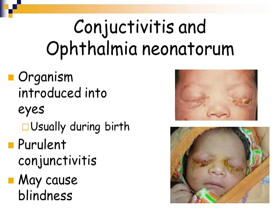Neisseria gonorrhoeae can cause conjunctivitis, a typical eye infection, and also ophthalmia neonatorum. Ophthalmia neonatorum occurs when the organism gets introduced into the eyes of a newborn baby, usually during birth as the baby travels through the birth canal of an infected mother who may have genital gonorrhea and not even know it. The organism gets into the eyes during delivery, and the baby ultimately develops a very purulent, oozy eye infection that could cause blindness.